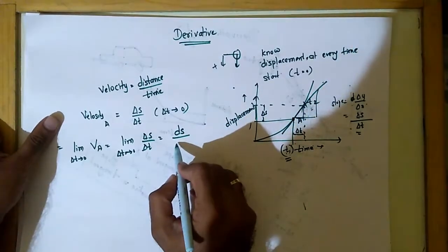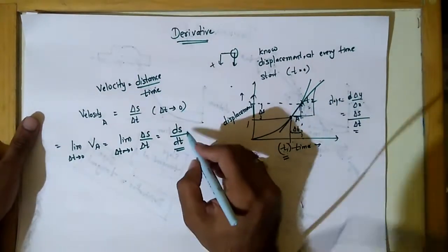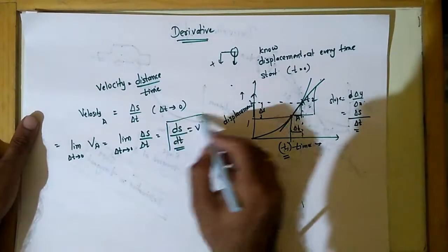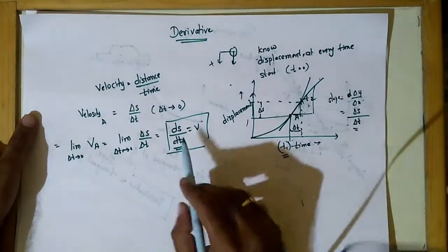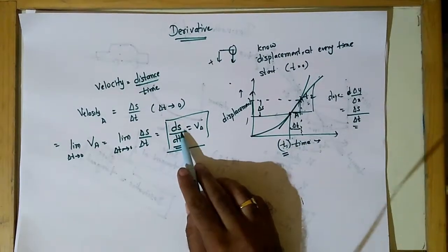We get ds by dt. This is the formula of velocity, and actually this is the time derivative of s. S is the distance.